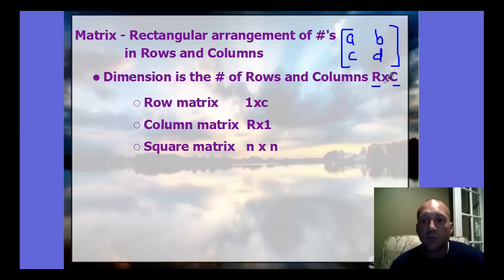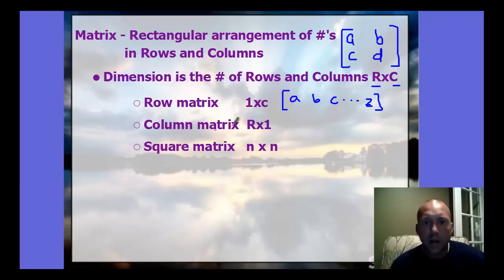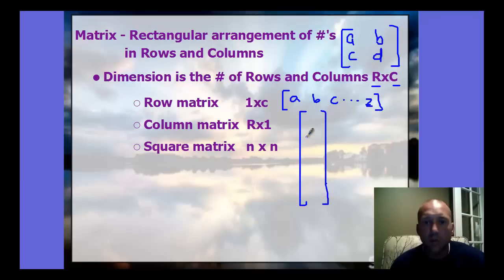A row matrix is a single row with as many numbers as you want — A, B, C, continuing on. A column matrix has as many rows as you want but only one column, going straight down. These are two special types called the row matrix and the column matrix.